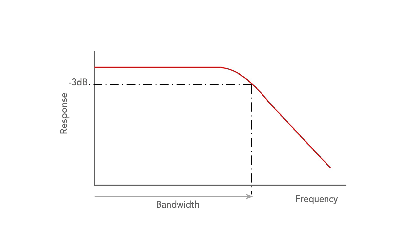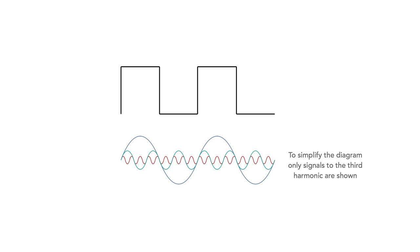If the scope has insufficient bandwidth, it won't be able to capture the signal properly — its response falls with increasing frequency. This is particularly important for square waves, where the harmonic components extend to many times the fundamental and we need sufficient bandwidth to capture them properly. If the bandwidth is not high enough, square waves will become progressively rounded, which is no use.